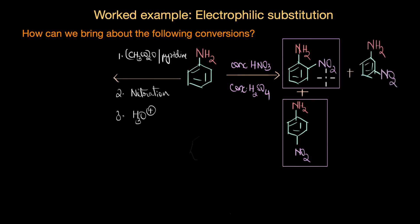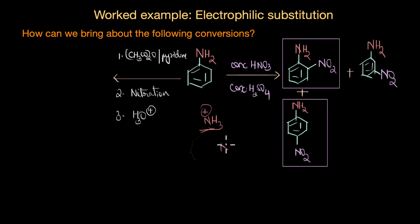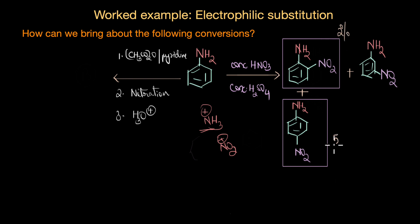Interestingly, we also get a substantial amount of the meta product. The nitrating mixture — concentrated HNO3 plus concentrated H2SO4 — is highly acidic. In such an acidic medium, NH2 gets protonated and becomes NH3⁺. This NH3⁺ is a deactivating group that directs the incoming electrophile NO2⁺ to the meta position. The product ratio is approximately 2% ortho, 51% para, and 47% meta — almost half meta. So direct nitration of aniline is not a great method.